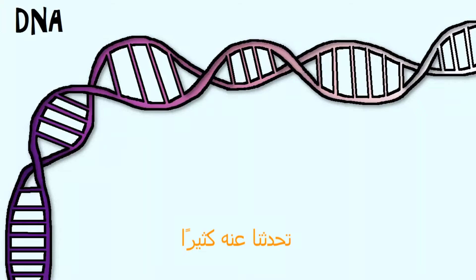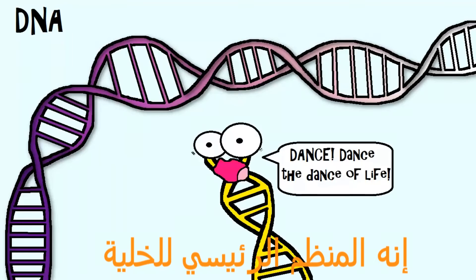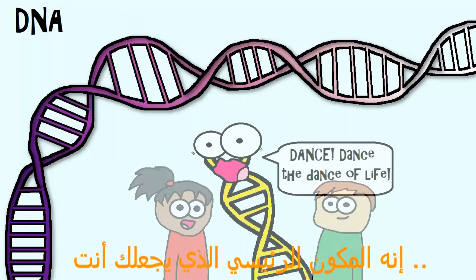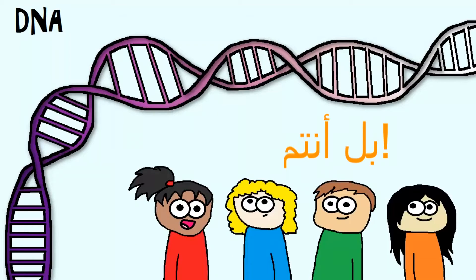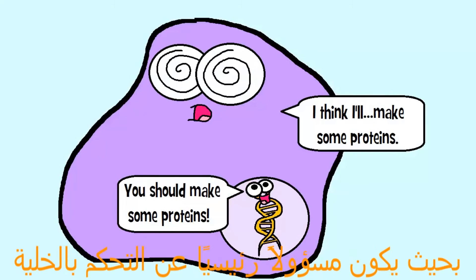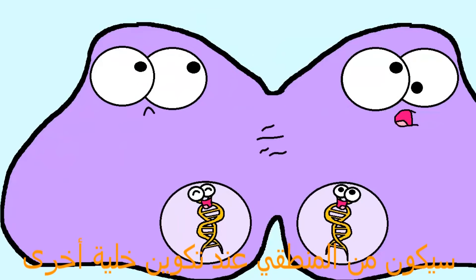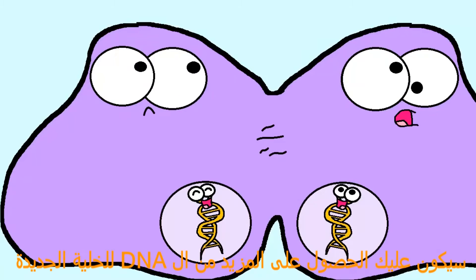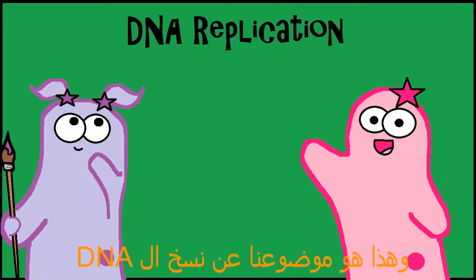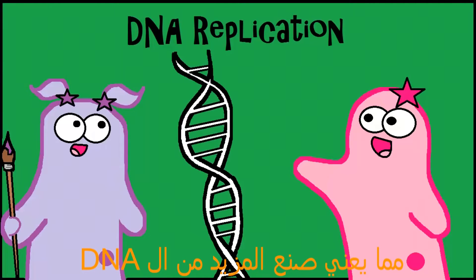DNA. We talk about it so much — it is the ultimate director for cells and it codes for your traits. It's a major component of what makes you, you. When you have a really important molecule like DNA that is ultimately responsible for controlling the cell, it would make sense that when you make another cell, like in mitosis, you would also have to get more DNA into that cell. And that introduces our topic of DNA replication, which means making more DNA.